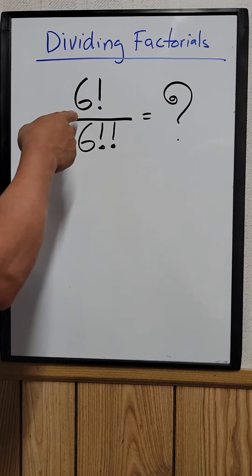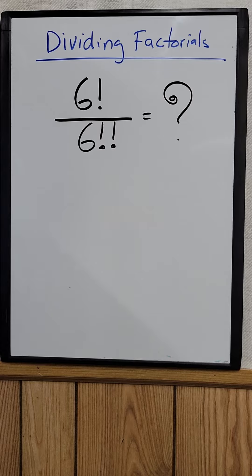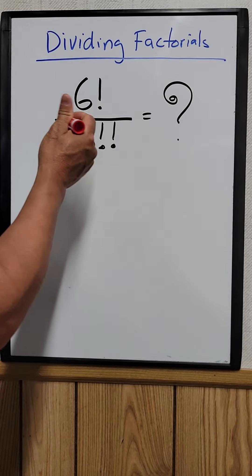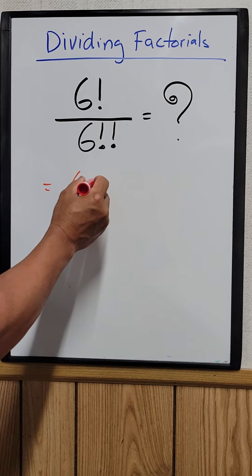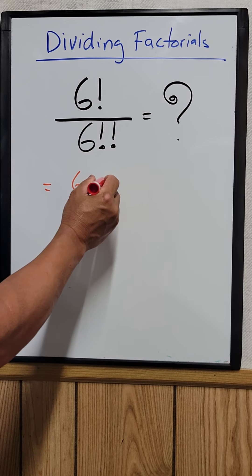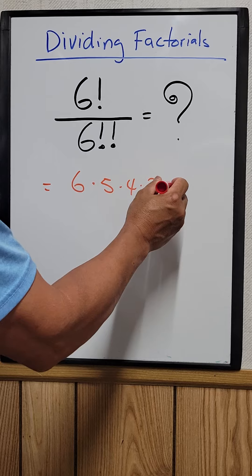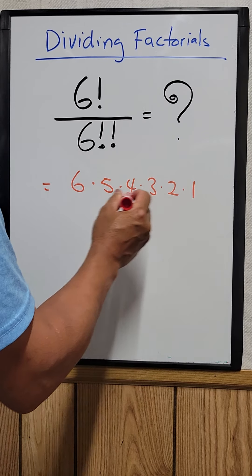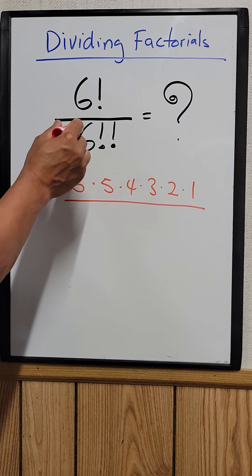So what is 6 factorial divided by 6 double factorial equal to? You know 6 factorial, which is equal to 6 times 5 times 4 times 3 times 2 times 1. How about 6 double factorial? So 6 double...